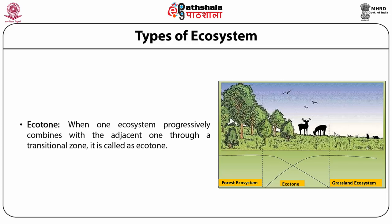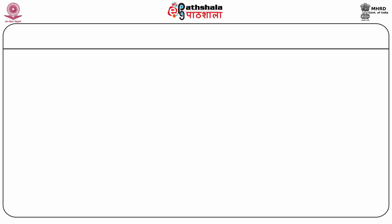The most common example of ecotone is an estuary, where a river meets the sea. In an estuary, there is regular mixing of fresh water and sea water, which results in higher biodiversity. An estuary present in Chennai, where the river Adiyar meets the sea, accommodates a large number of organisms including many species of birds.